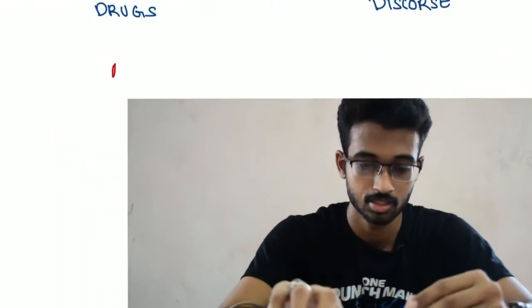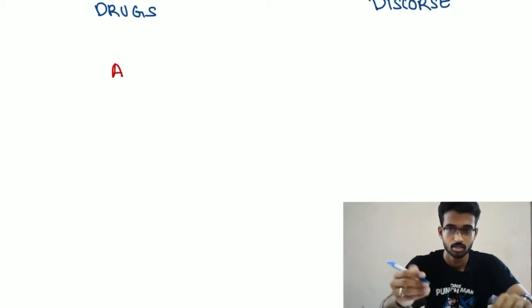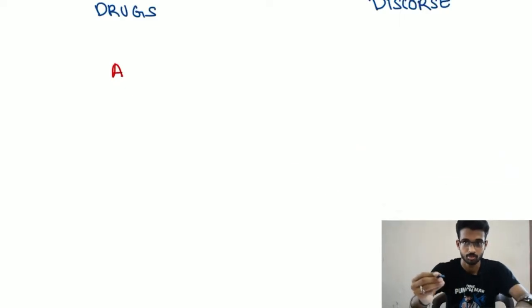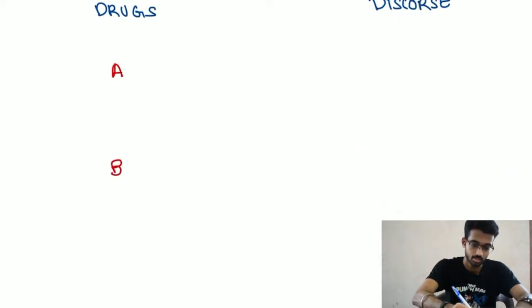Basically, we are going to talk about the name of drug. What is the category? The short form is A, B, and C.